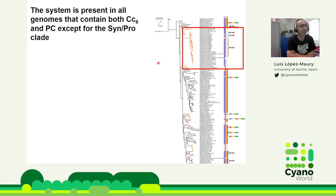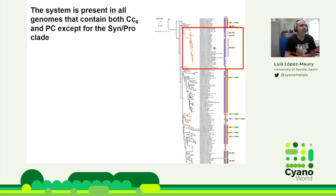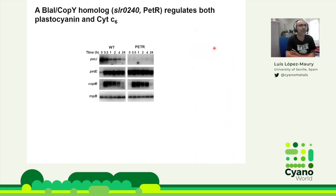The SFR1 clade — the Synechococcus-Prochlorococcus clade — was known to lack regulation of these two genes, as shown by metaproteomics of marine Prochlorococcus and Synechococcus. So it makes sense that these two regulatory genes are absent in this clade. To test whether this was the regulator of the switch, we took it to our favorite system, Synechocystis, and generated the knockout mutant in the corresponding gene.